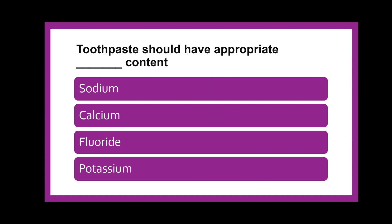The question is: Toothpaste should have appropriate dash content — whether sodium content, calcium content, fluoride content, or potassium content? The correct answer is fluoride content. The fluoride in toothpaste is in the form of sodium fluoride, along with other ingredients such as abrasives, calcium carbonate, etc.